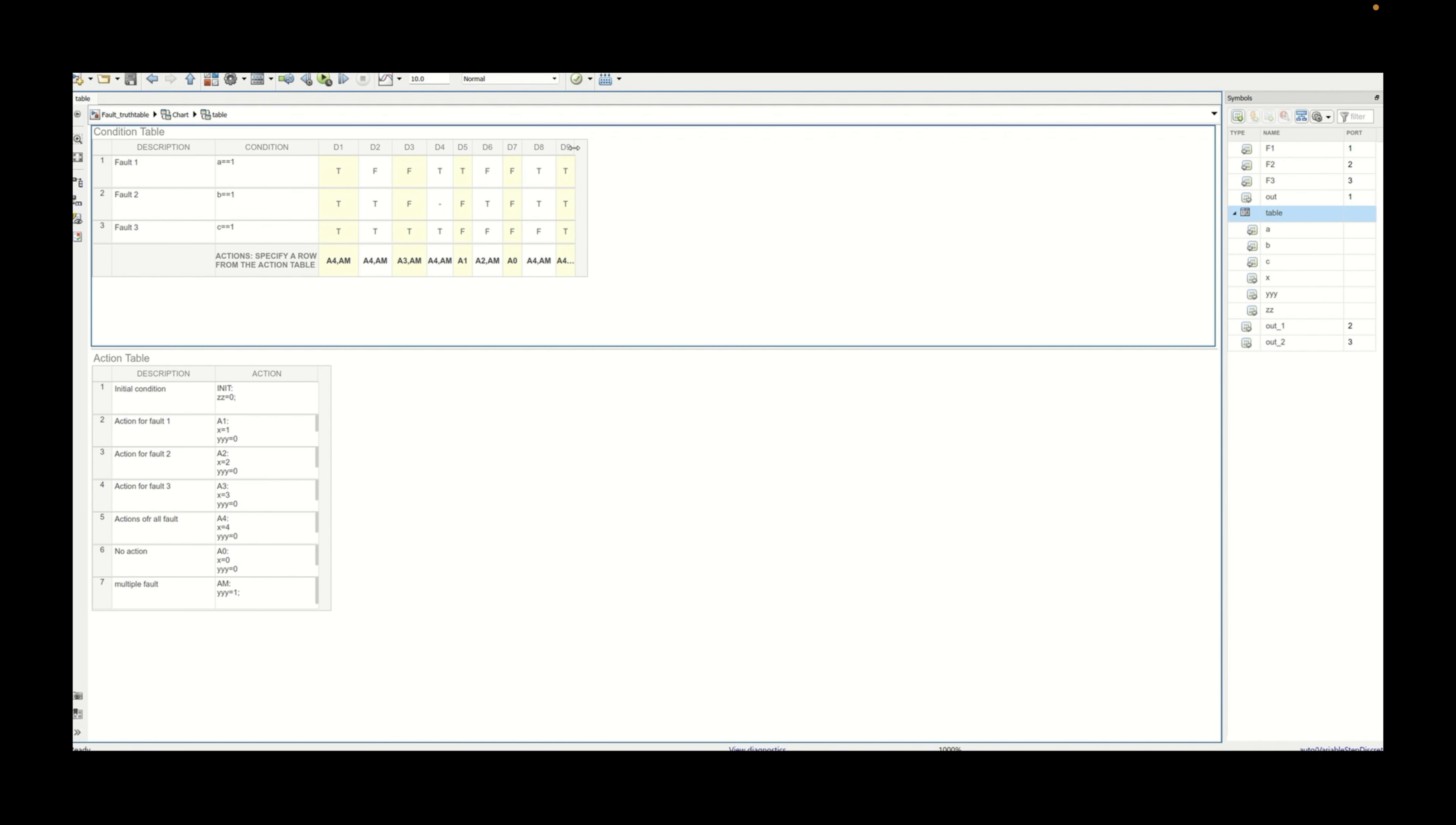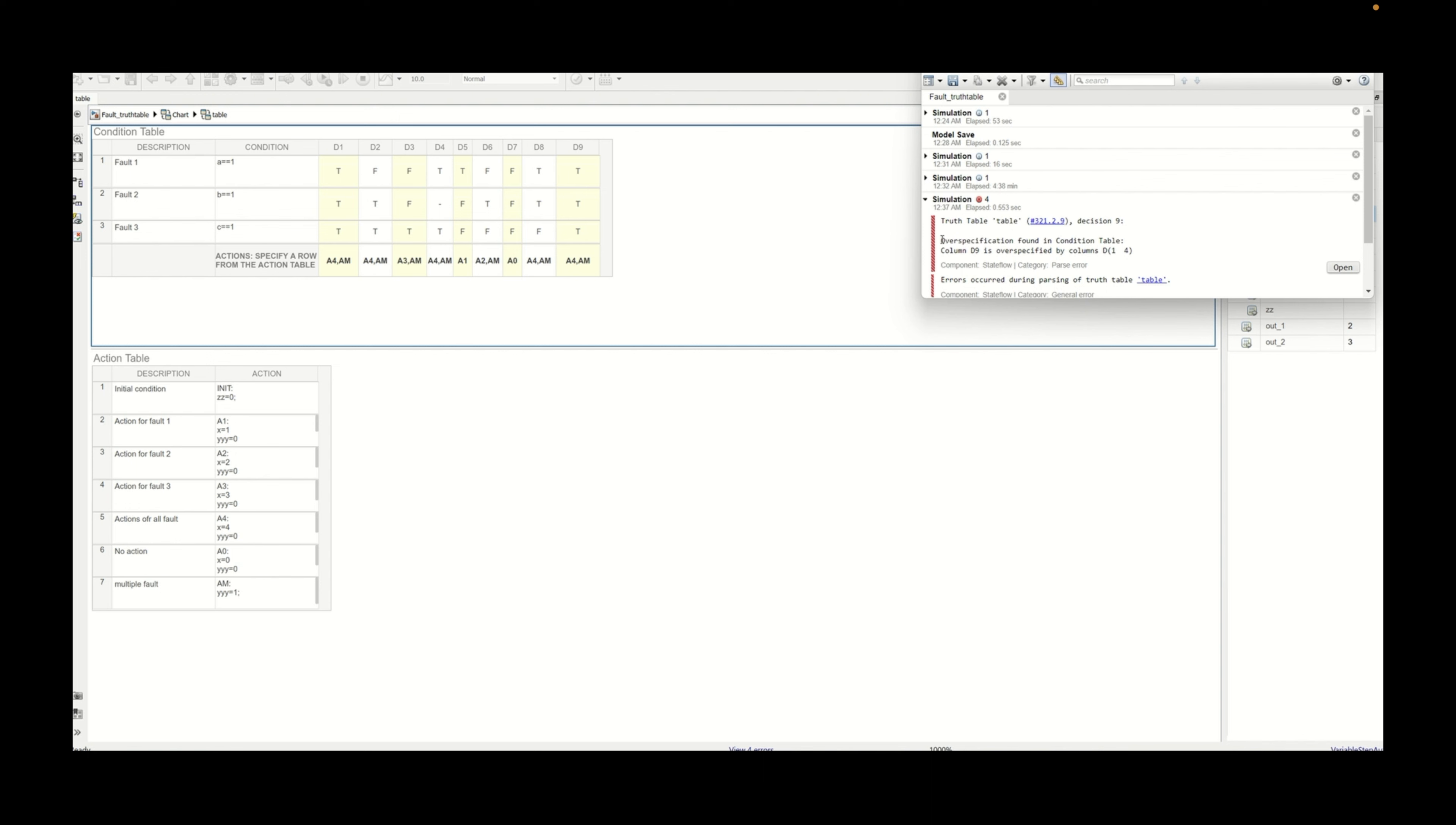Here, decision number one and decision number nine are exactly equivalent. Suppose if you just run it now, then you will get an over-specified table error. Here you can see it is over-specified found, and column number d1 and d4 or d9 is the over-specified column. So here we need to remove d9 and then it will be resolved.